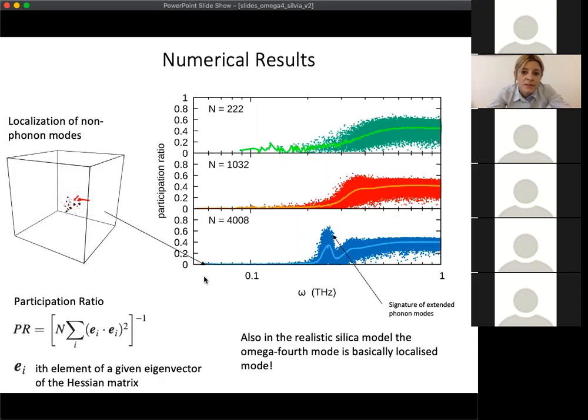To know information about the localization of the modes, we compute the participation ratio, which is basically for a single mode, how many particles participate in a given mode. If this PR is one, it means that all the particles participate in one mode, like translational motion. If the participation ratio is close to zero, it means that only few particles move in a given frequency. This is the participation ratio as a function of frequency for the three investigated system sizes. We can see a snapshot of an example of a very localized mode with a participation ratio of 0.001.